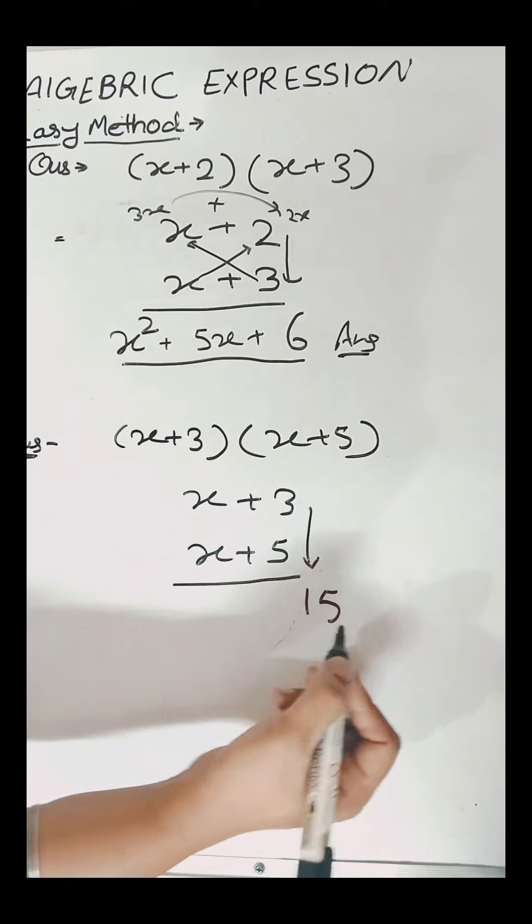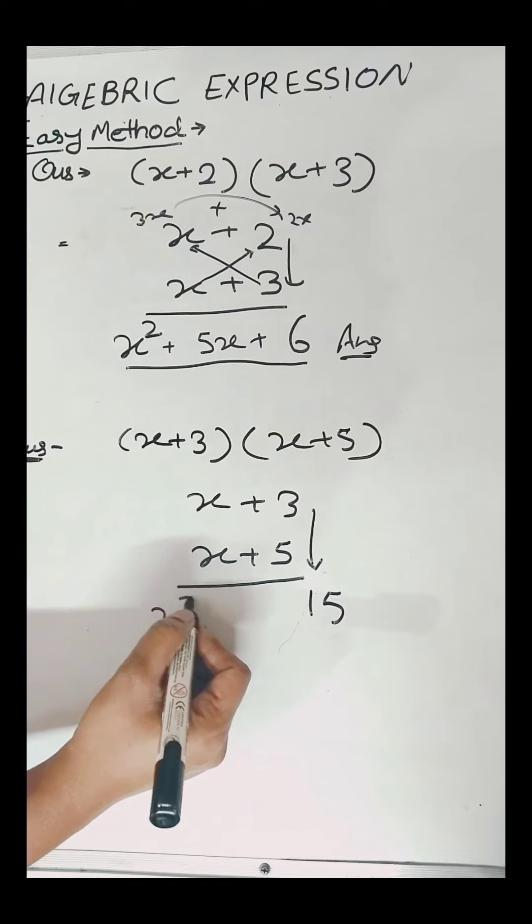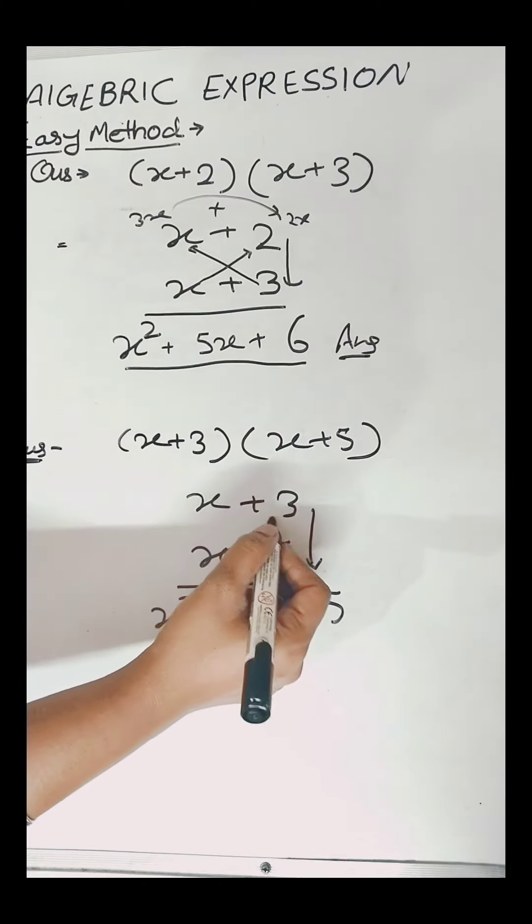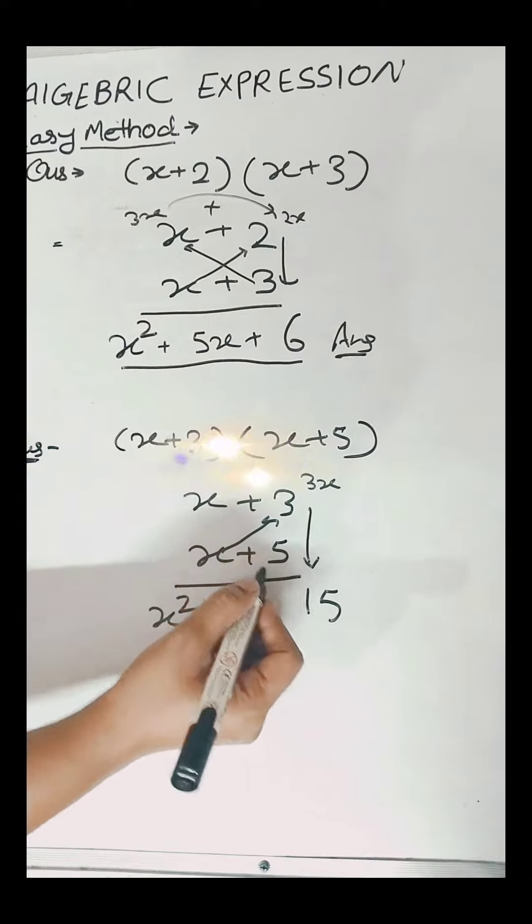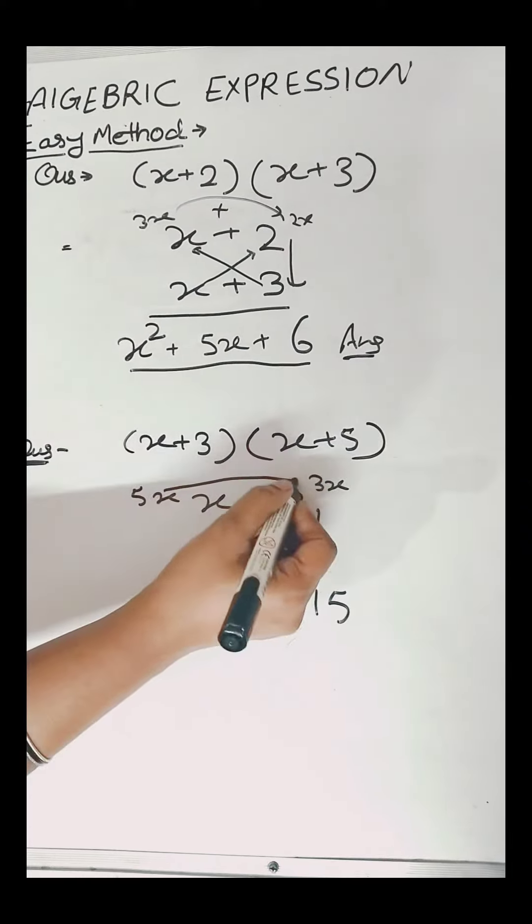Again we will multiply 5 and 3, which is equal to 15, and x and x, which is equal to x square. Now we will multiply x by 3, which is equal to 3x, and x by 5, which is equal to 5x.